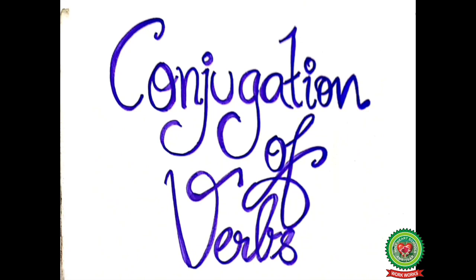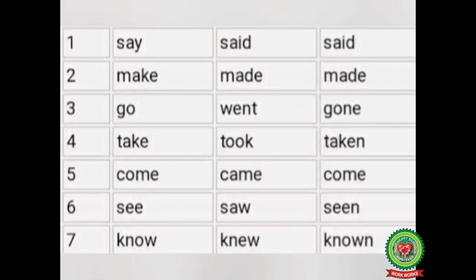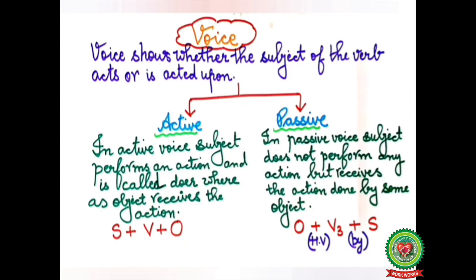Before starting with voice, we will first revise conjugation of verbs. Here are some examples. We will revise present form, past form, and past participle. The first example: say, said, said. Second: make, made, made. Third: go, went, gone. Fourth: take, took, taken. Fifth: come, came, come. Sixth: see, saw, seen. And the last is: know, knew, known.